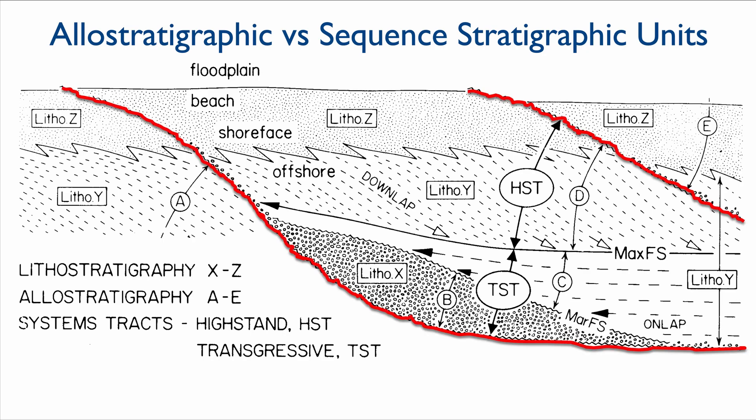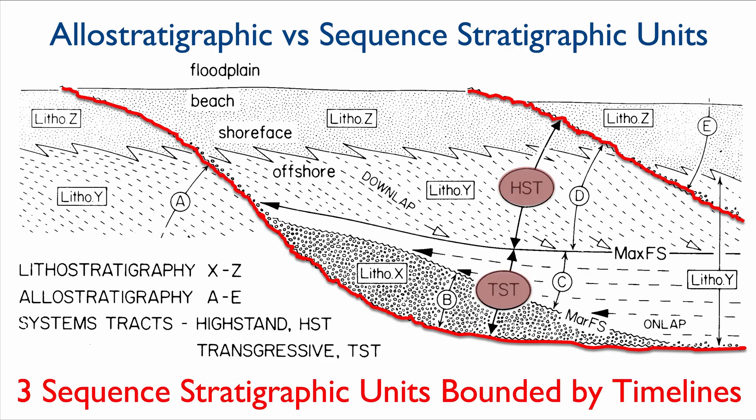So in this case, we recognize only two regional unconformities that effectively cap the whole sequence. So that means that we end up with only three sequence stratigraphic units.